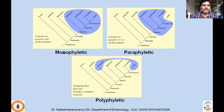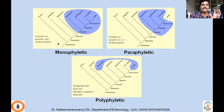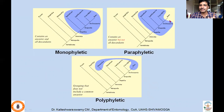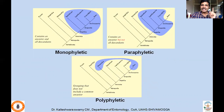Let us see what monophyly means. Monophyly is the classification which contains an ancestor and all the descendants. That particular group consists of all the descendants of a particular ancestor, and only then should it be considered monophyletic. It should not be paraphyletic or polyphyletic. Our classification should be monophyletic but not paraphyletic or polyphyletic. Paraphyletic means it contains an ancestor but not all the descendants — one group is actually left out, so that classification is also wrong. Polyphyletic means grouping that does not include a common ancestor — for example, aves and mammals from different ancestors grouped into a single cluster. That is also not a natural classification.